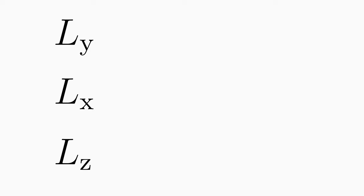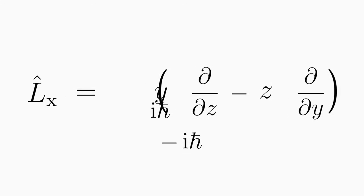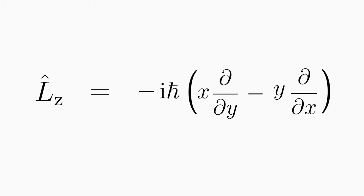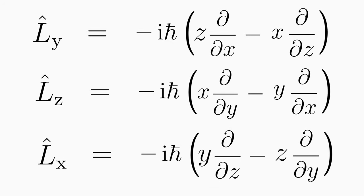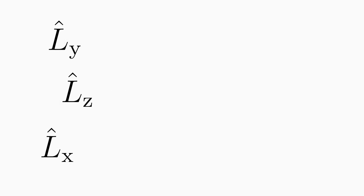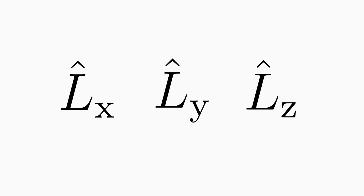For this purpose, we equip them with hats and insert the momentum operators and position operators. So we get the result for the l̂x component, the classical angular momentum component ly becomes the l̂y operator, and lz becomes the l̂z operator. Now we have constructed angular momentum operators. The question is: are l̂x, l̂y, and l̂z Hermitian operators? This is important because only if they are Hermitian operators, they represent physical quantities and can be measured in an experiment.